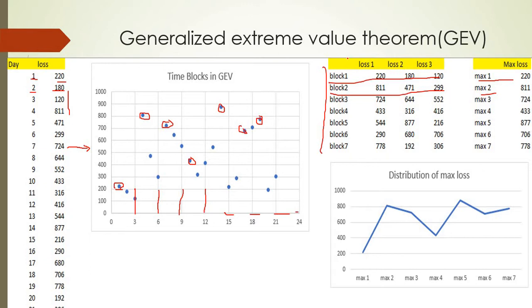So on here you have these blocks, and in each block you have three days with their losses, and then you select the maxima. For example, in block one you have day one with 220 million dollar loss, day two with 180 million dollar loss, and day three with 120 million dollar loss. So the maximum loss in that bucket is 220. Similarly, the maximum loss in bucket two is 811. Now you take all these maximums.